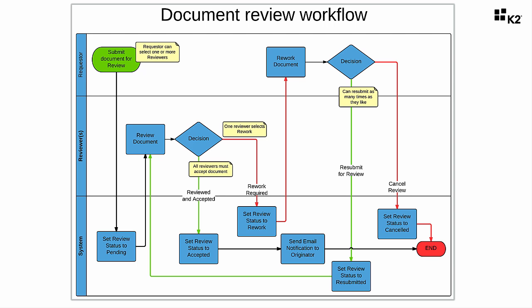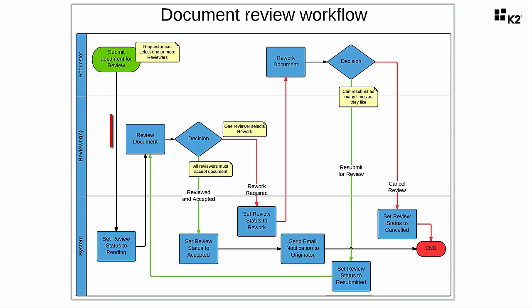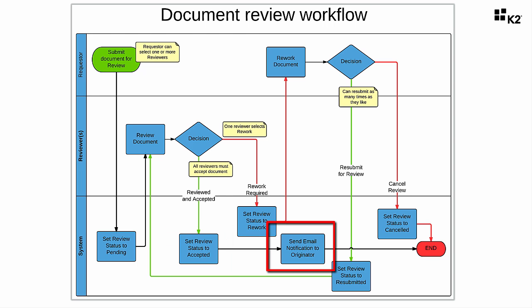The review workflow will allow the requester to submit the document for review to one or more reviewers. Upon doing this, the system will update the document's status to indicate that reviews are pending. A review document task will be delivered to all assigned reviewers, with two possible outcomes. If all the reviewers accept the document, the system will set the document's status to Reviews Accepted, email the originator to let them know their document was accepted, and then end the workflow. Alternatively, our rework step comes into play as soon as any one of the reviewers indicates the document is not accepted.